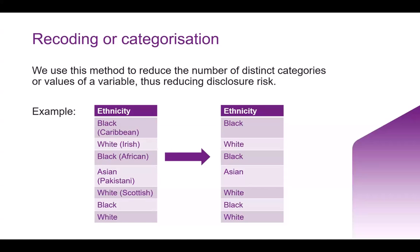Let's look at recoding, also known as categorization. Disclosure risk partly lies in how many people can be recognized by certain characteristics — the fewer there are in a category, the more likely it is to identify a person. Recoding or categorization means reducing the number of distinct categories of characteristics. For example, rather than having more refined categories of ethnicity where black Caribbean is distinct from black African, these are all combined under one category of black, helping reduce precision and raising the number of people in that category.